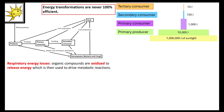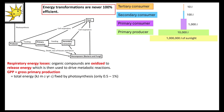Plants also need to do active transport — for example during translocation, sucrose must be actively loaded into the phloem. The gross primary production (GPP) is the total energy fixed by photosynthesis, and that is only about 0.5% to 1% of incoming sunlight energy. We always need to make sure we know our units: kilojoules per metre squared per year.